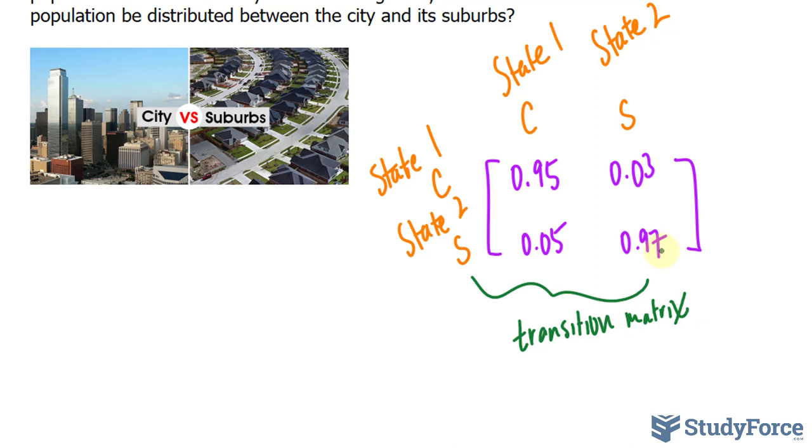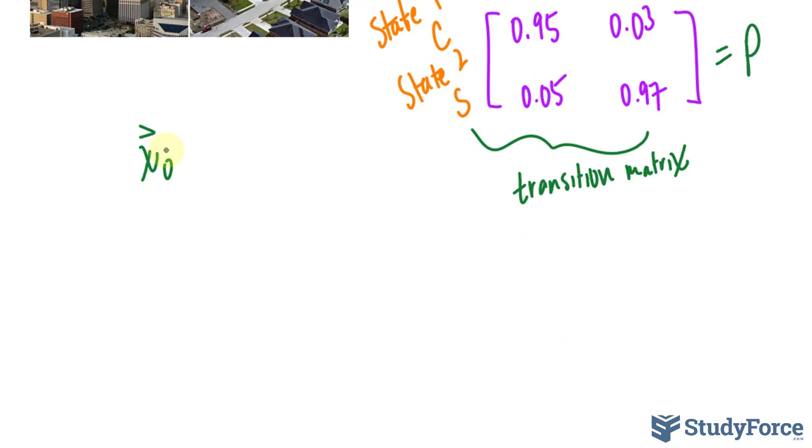What we're looking to solve in this question is the steady state vector, which I'll represent as x sub-0. The steady state vector is defined as the transition matrix, which we've called P for simplicity, times the steady state vector is equal to an eigenvalue of 1 times the steady state vector.